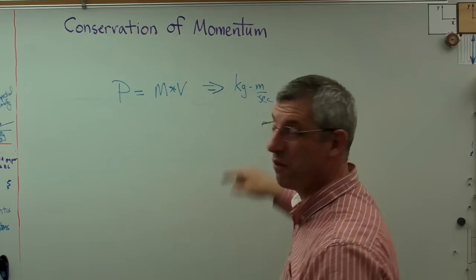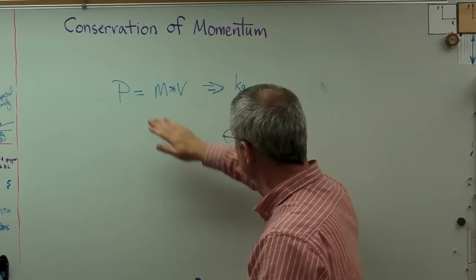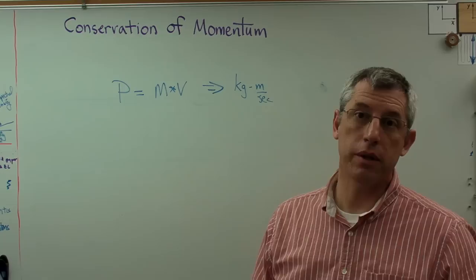If you want to do this in English units, that's going to be slug feet per second, a little bit better is pound seconds, but it's only a little better. This quantity is useful because in a lot of cases momentum is conserved. That means momentum doesn't change as some body or some collections of bodies move.